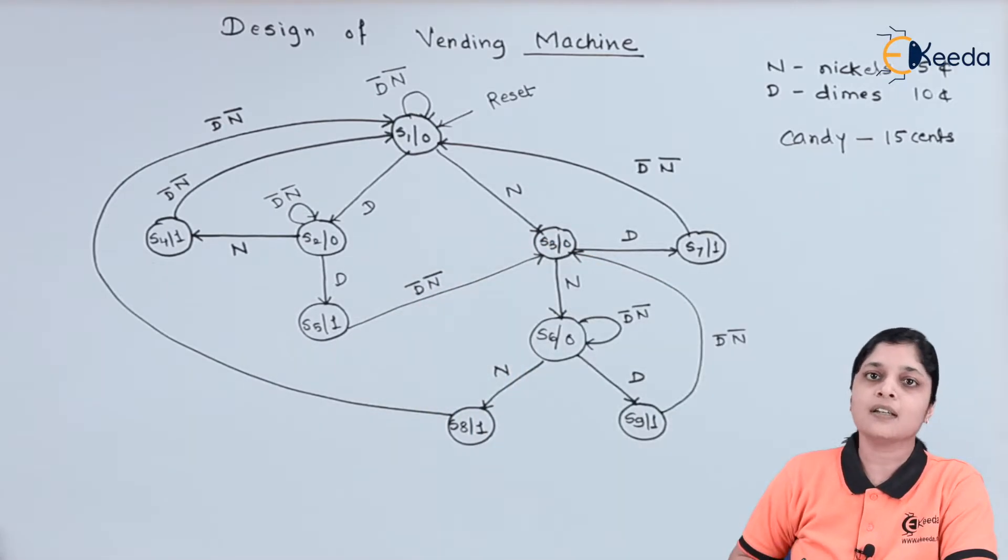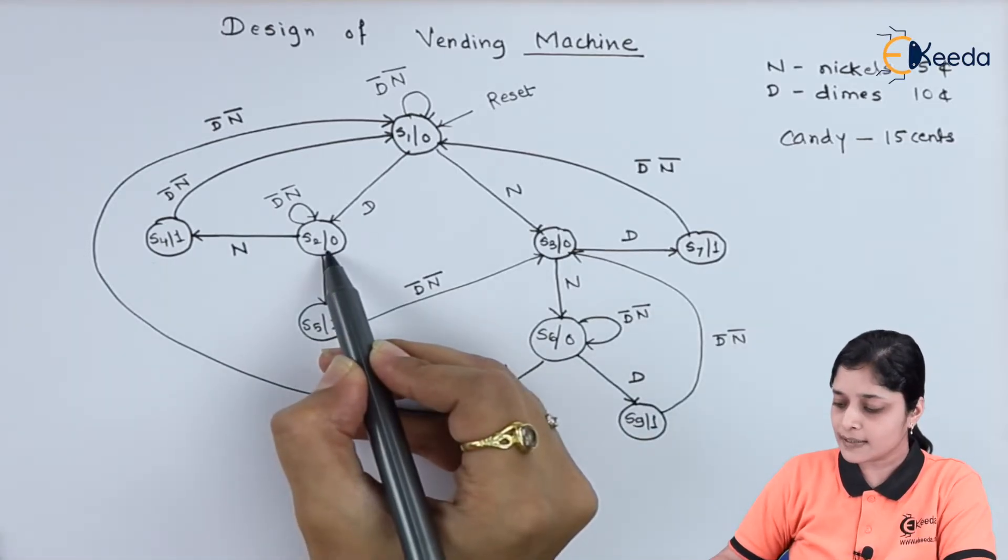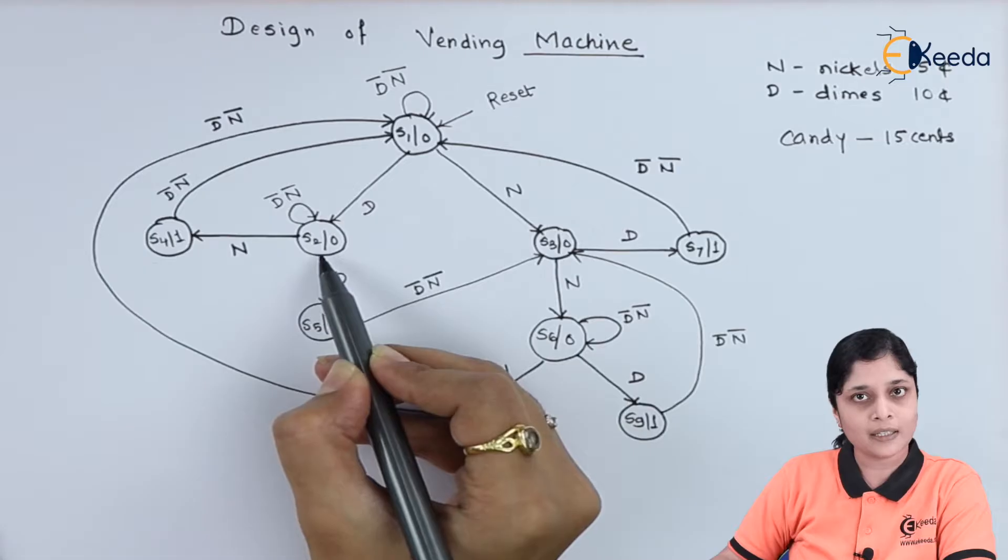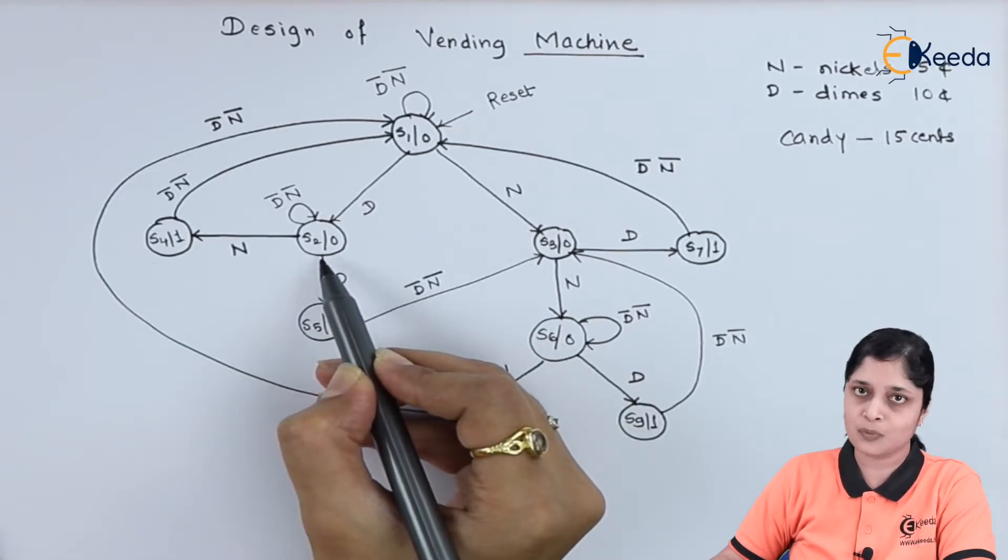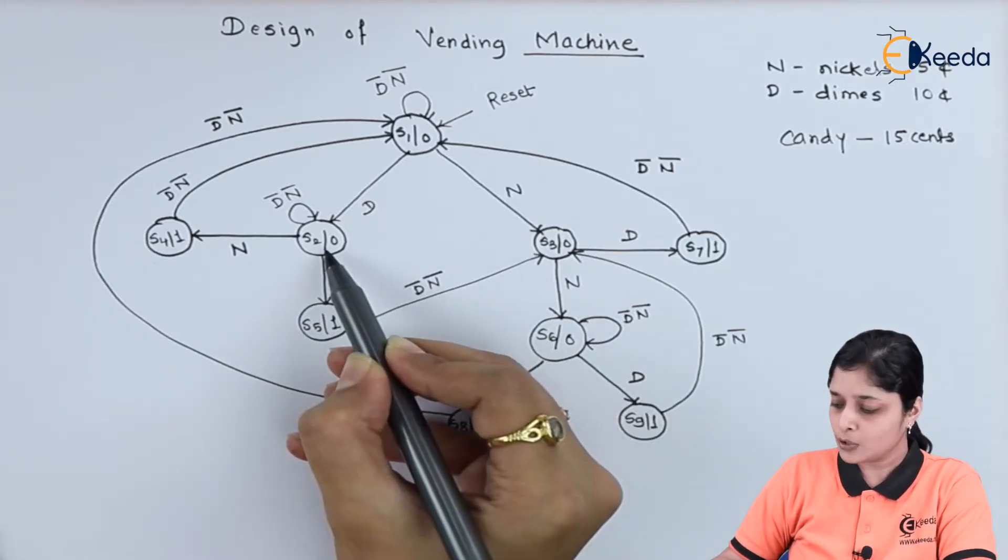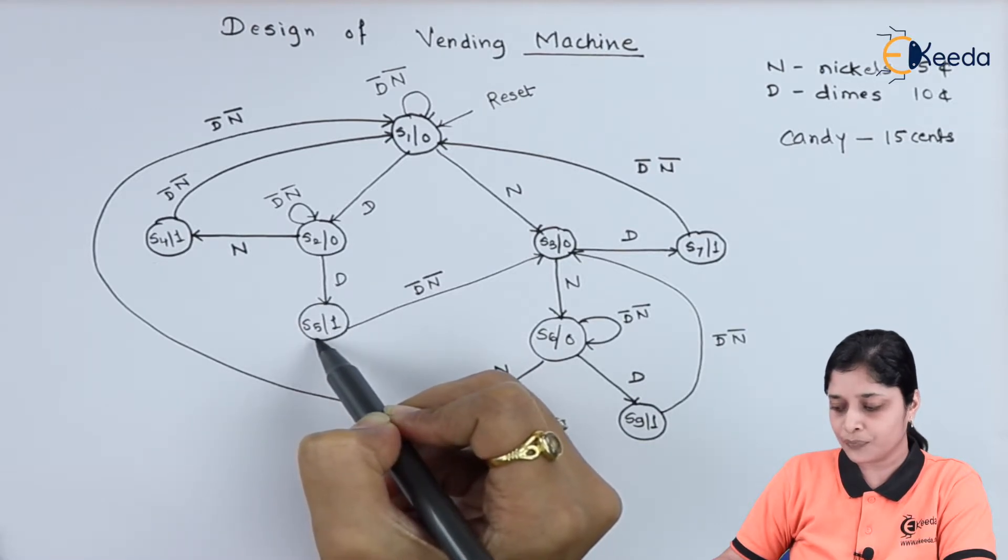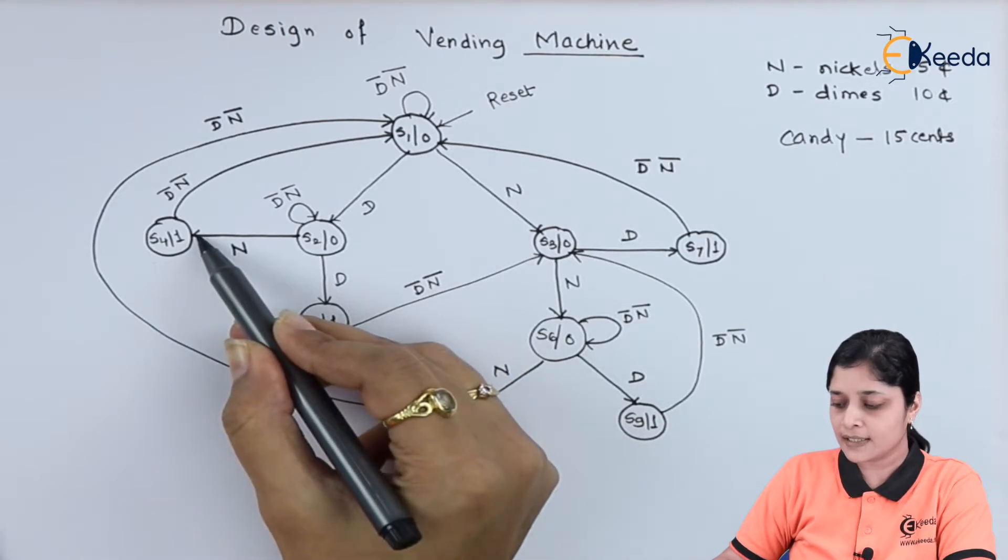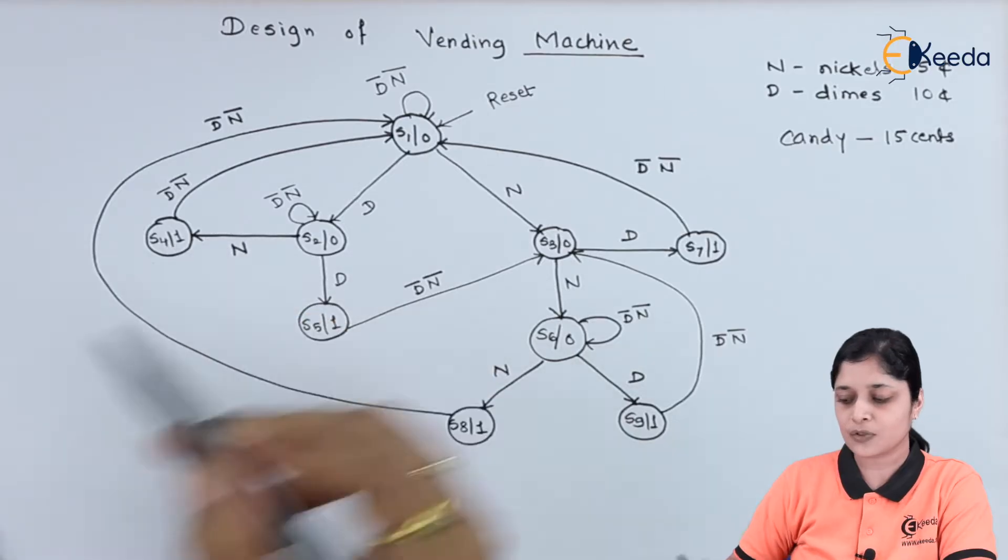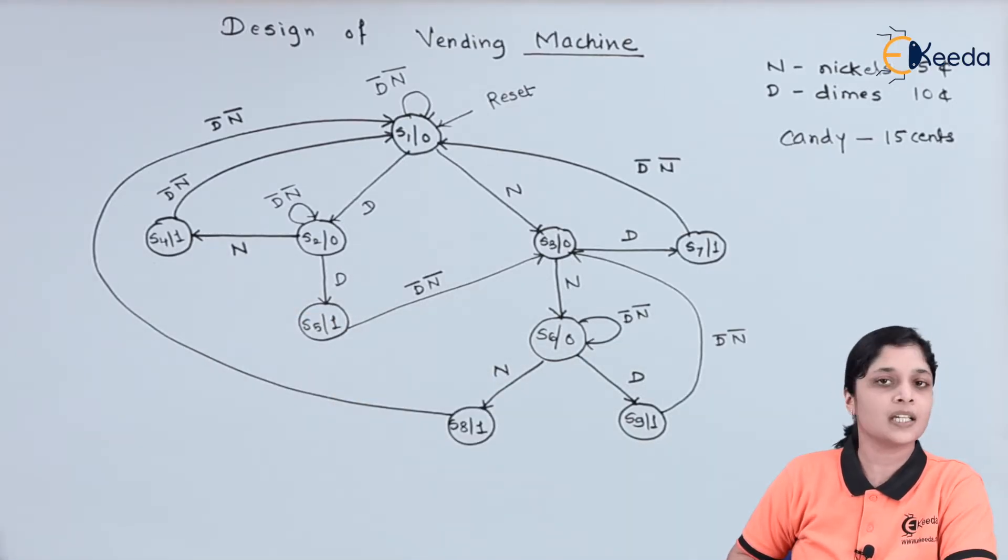In this state S2, again customer has to deposit more money. If dime is inserted, it will go to state S4 and gives you the respective candy.